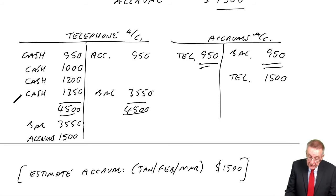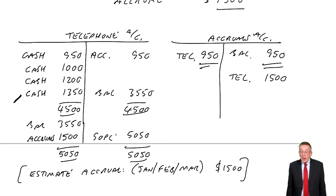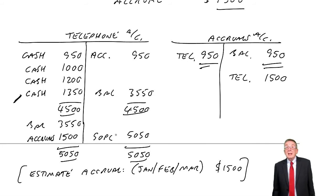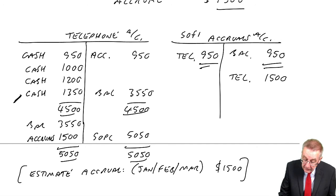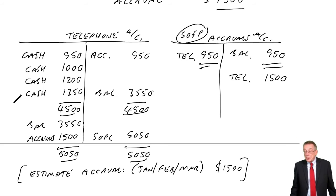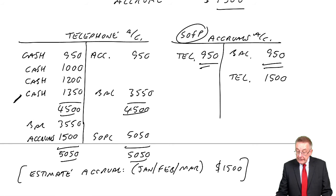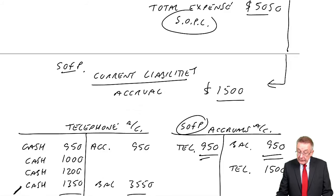And that one entry makes it all perfect. Because telephone, the total expense, is now 5,050. And as always, that goes to the statement of profit or loss. Credit telephone, debit statement of profit or loss. And the telephone account, the balance is zero, ready for next year. The accruals account, well, there's our liability, at the end of this year. And that will appear in the statement of financial position. And as always, we leave the balance there. It's still there at the beginning of next year. And was that what I got? Yes, 1,500, 5,050. There we are.